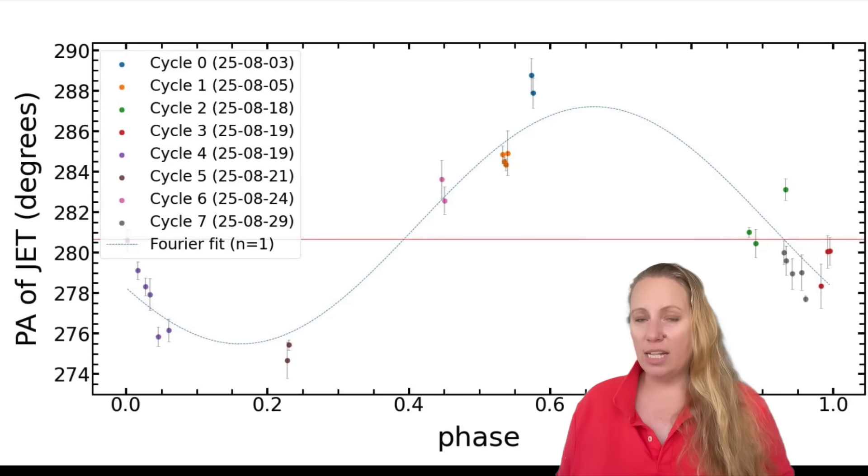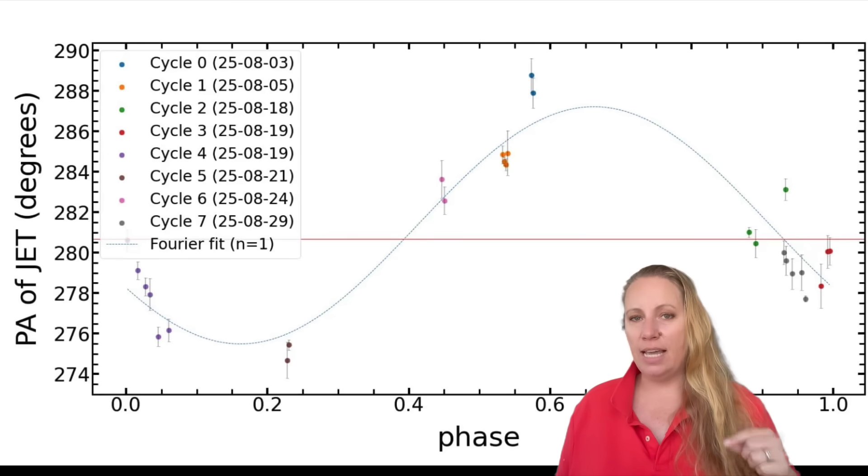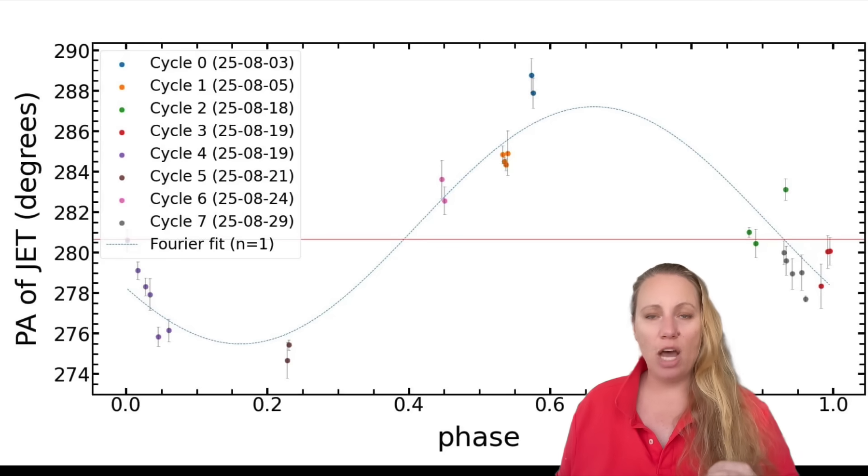What do the colored dots mean? Each colored dot is a real observation. Each color is a different observing cycle taken on different days. So that's what we're seeing here. The dates are just listed in the legend on the left of this image. So this is real data guys. This is not a simulation. The vertical bars on the dots are error bars. They show uncertainty in the measurement.